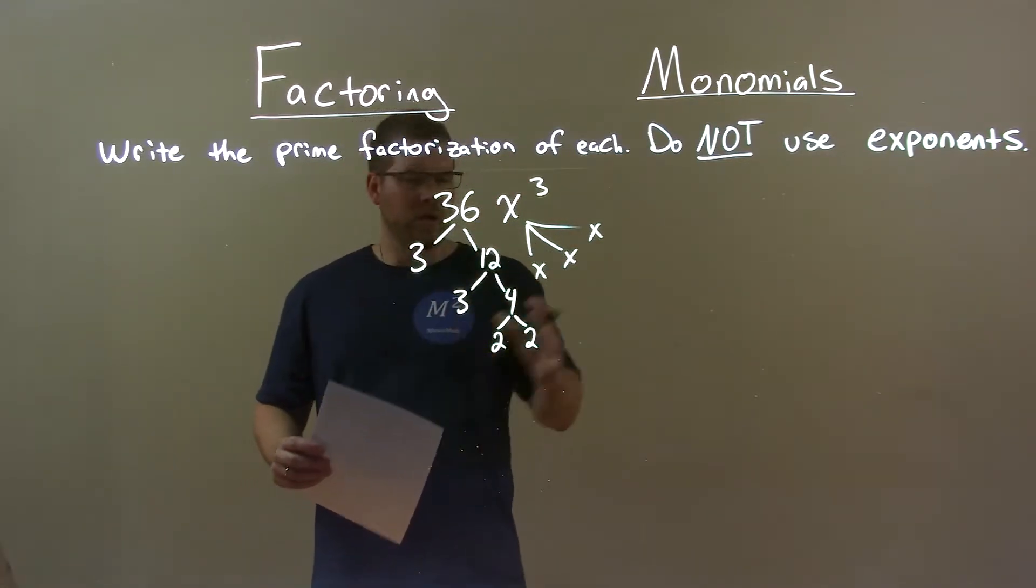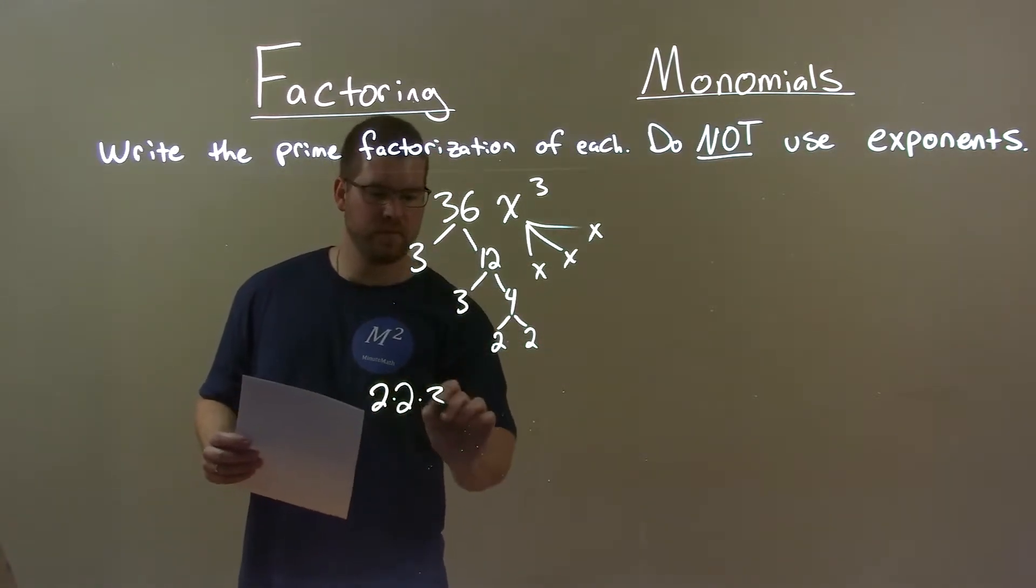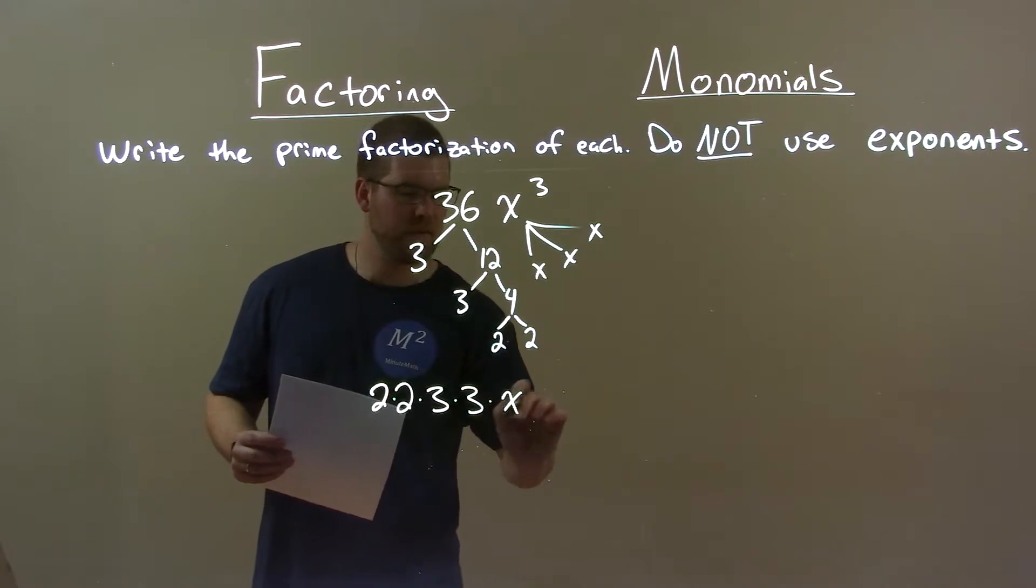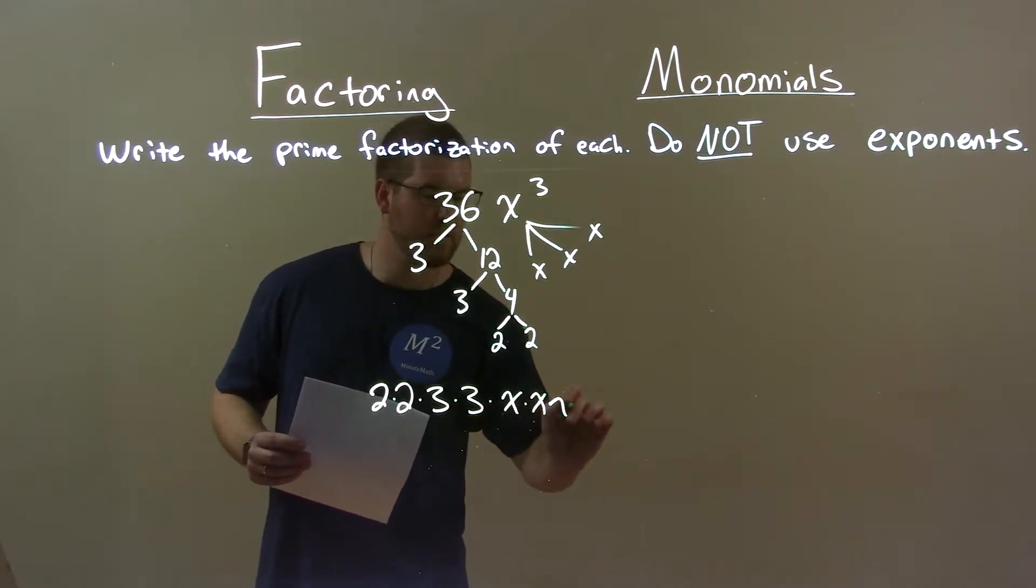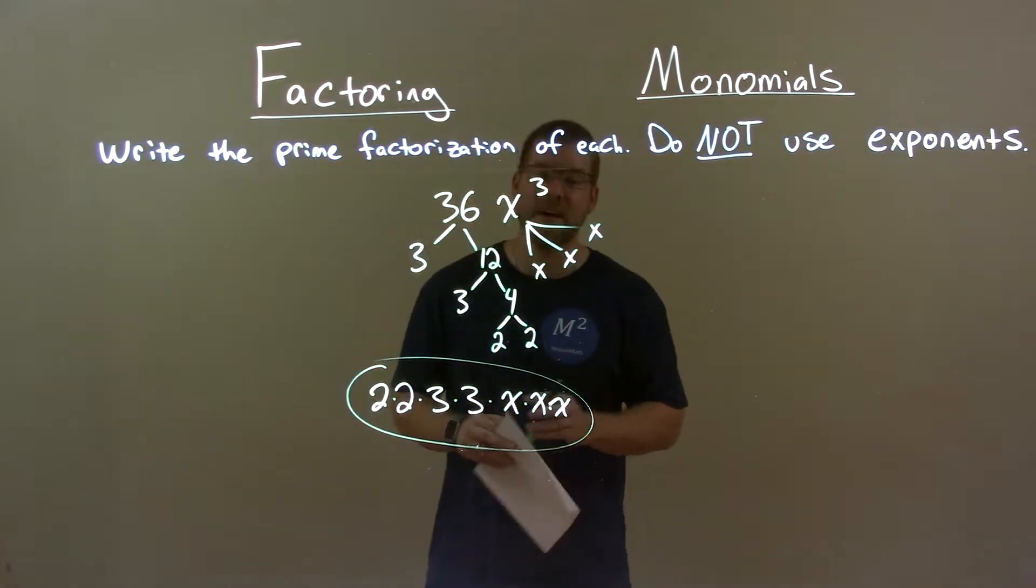Let's rearrange it in order. 2 times 2 is first, then the threes, then x times x times x. And that is now our final answer.